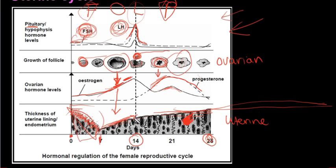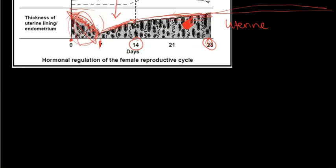The endometrium is very thick after day 14 because of the secretion of progesterone and estrogen. If fertilization does not occur, the corpus luteum degenerates after about 24 days, and progesterone and estrogen levels fall. This means the endometrium is shed during menstruation. Because progesterone is no longer inhibiting FSH, FSH is released again, and we start over with a new primary follicle developing into the Graafian follicle.